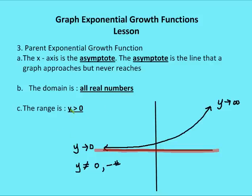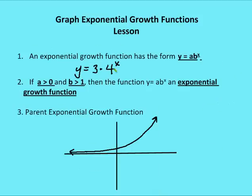The range is going to be y is greater than zero. Y will never get to be zero because, regardless of the value for x in the parent growth function, y is always going to be a positive number.